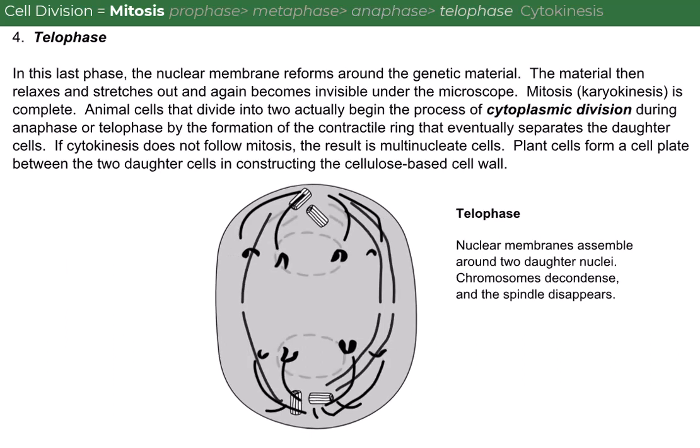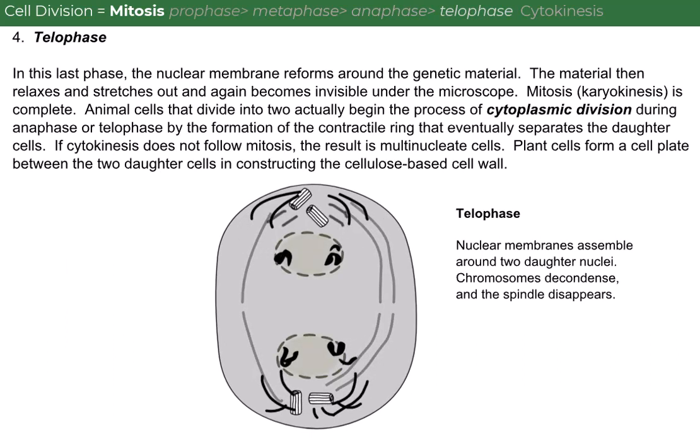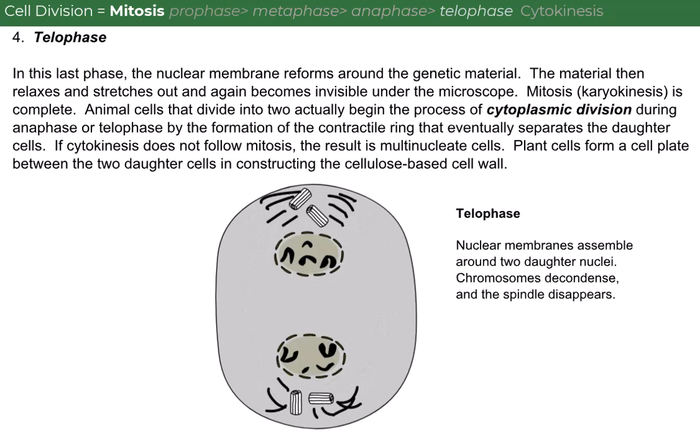Telophase. In this last phase, the nuclear membrane reforms around the genetic material. The material then relaxes and stretches out and again becomes visible under the microscope.